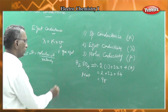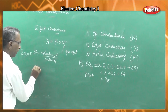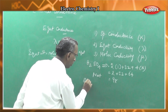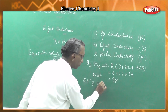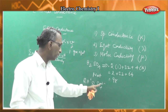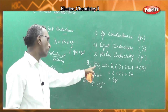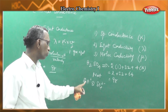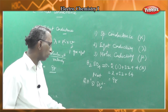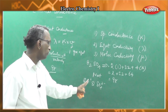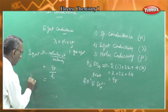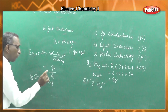The molecular weight of sulfuric acid H₂SO₄ is 98. Equivalent weight equals molecular weight divided by valency. H₂SO₄ gives 2H plus and SO₄²⁻, so valency is 2. Therefore, equivalent weight of sulfuric acid equals 98 divided by 2 equals 49.